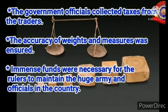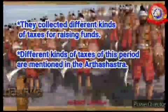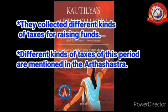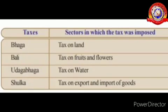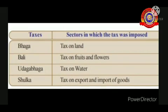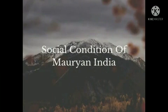Government officials collected taxes from the traders, and the accuracy of rates and measures was ensured. Immense funds were necessary for rulers to maintain the huge army and officials. Different kinds of taxes are mentioned in the Arthashastra. Students, look here — some of them are: bhaga, a tax on land; phali, a tax on fruits and flowers; udaga phaga, a tax on water; and shulka, a tax on export and import of goods.